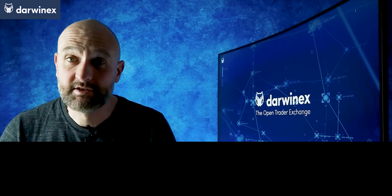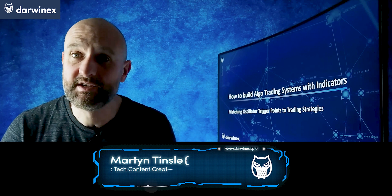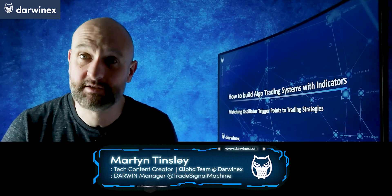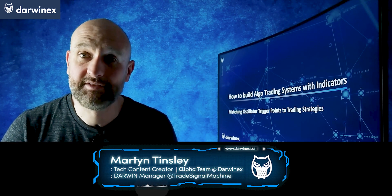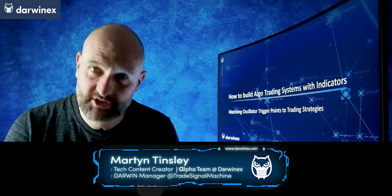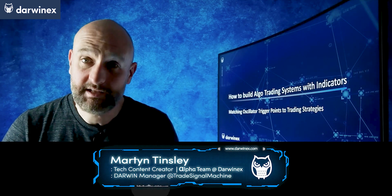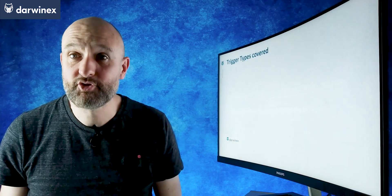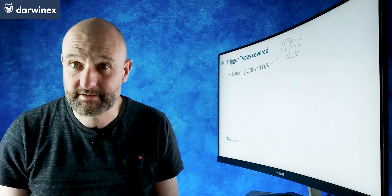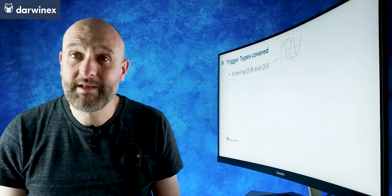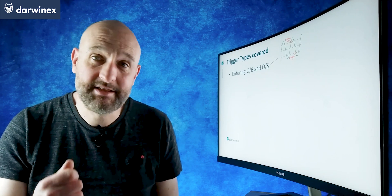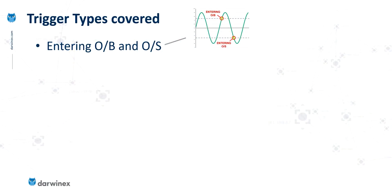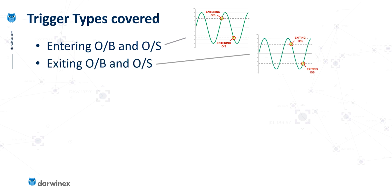Oscillators need to be used in different ways depending on the type of system you're trying to use and the type of edge you're trying to extract from the market. Last time, we considered five different trigger points of oscillators. The first is when the oscillator enters either the overbought region or the oversold region, and then we looked at the opposite — when they exit those regions.